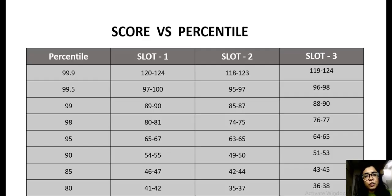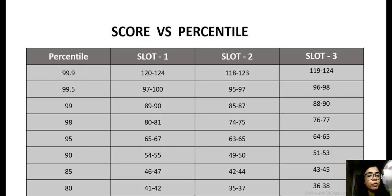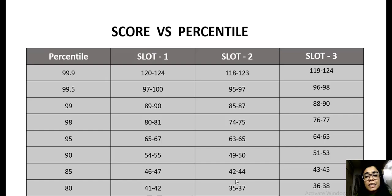Accordingly, we have prepared our list of score versus percentile. You can look into the table to figure out — if your raw scores are between 41 to 42 and you belong to slot one, you can get around 80 percentile. Whereas 35 to 37 in slot two can give you 80 percentile, and 36 to 38 for 80 percentile in slot three.